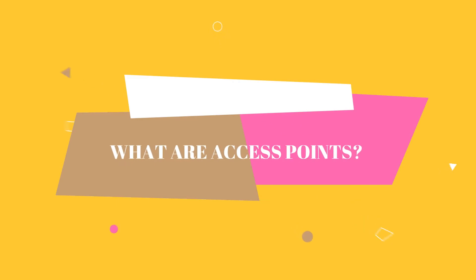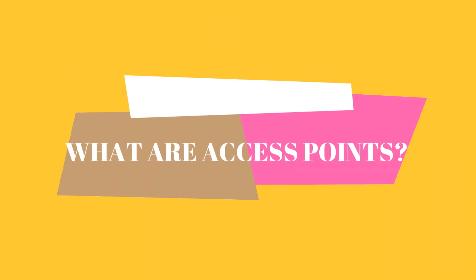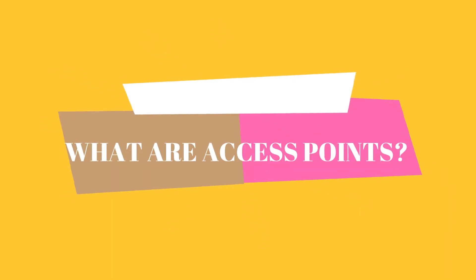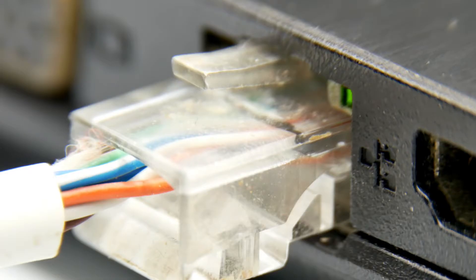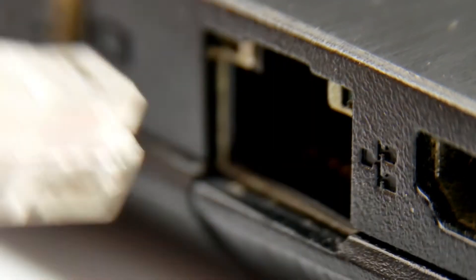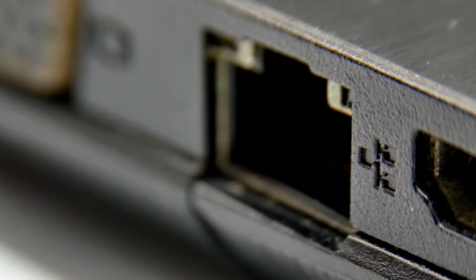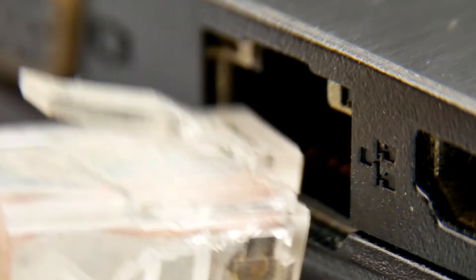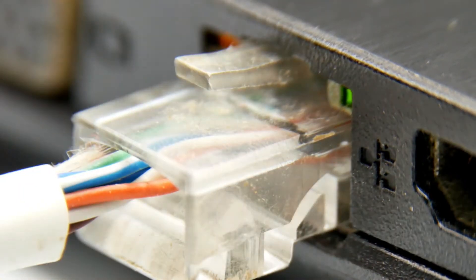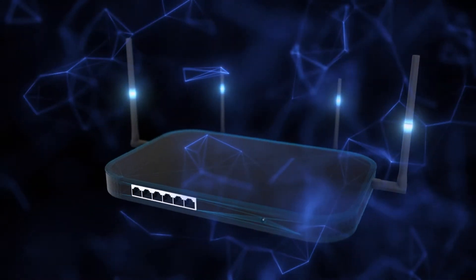Let's start with the first question: what are access points? WLAN stands for wireless local area networks. Access points are usually used to generate WLAN. An Ethernet cable allows a wired router, switch, or hub to connect with access points that make a Wi-Fi signal proceed towards designated areas.